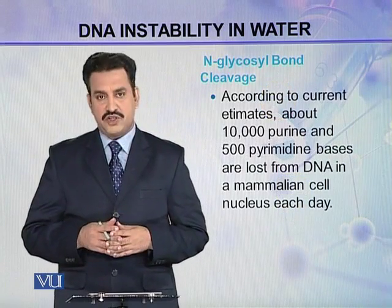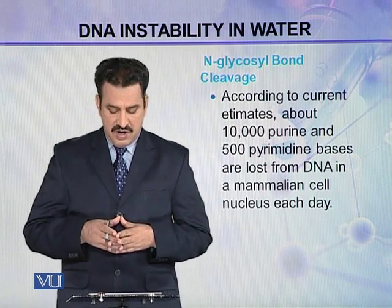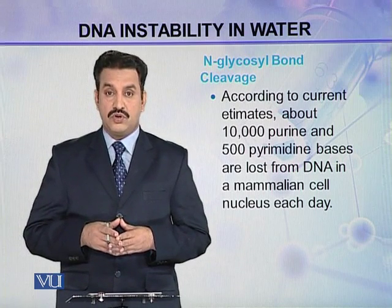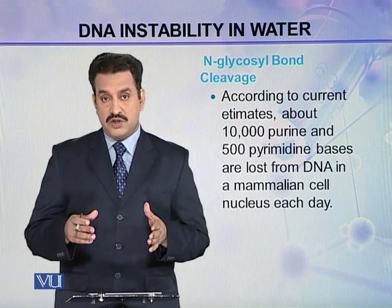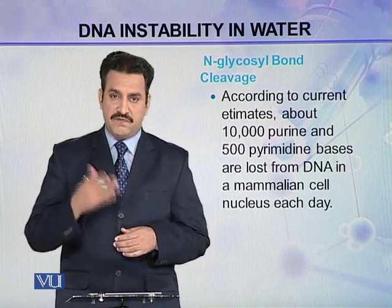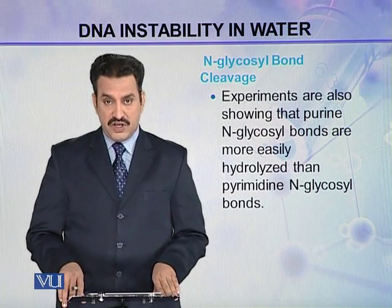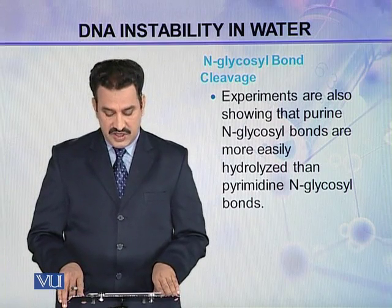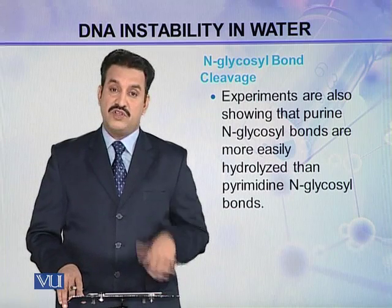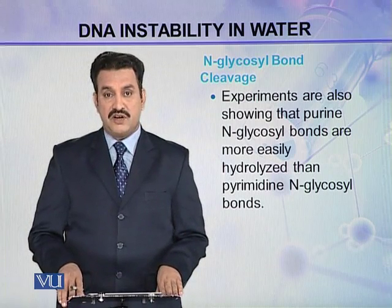According to current estimates, about 10,000 purine and about 500 pyrimidine bases are lost or damaged from DNA in a mammalian cell nucleus each day. Experiments show that purine glycosyl bonds are more easily hydrolyzed compared to pyrimidine glycosyl bonds, which explains why far more purines are lost than pyrimidines.